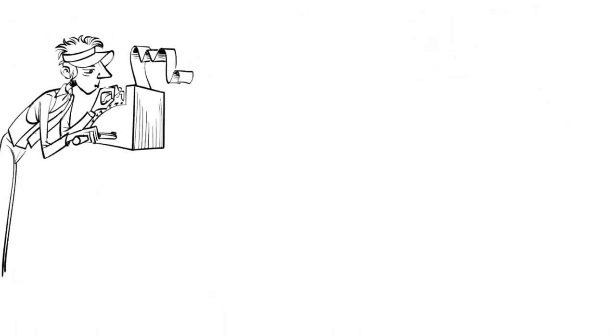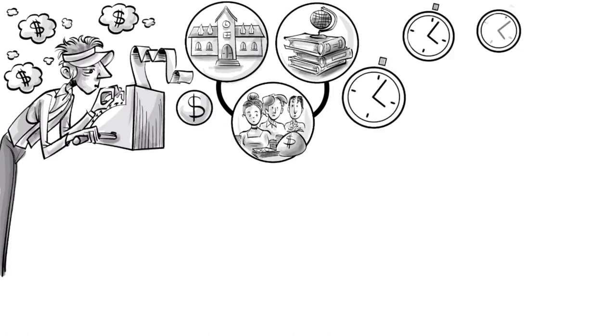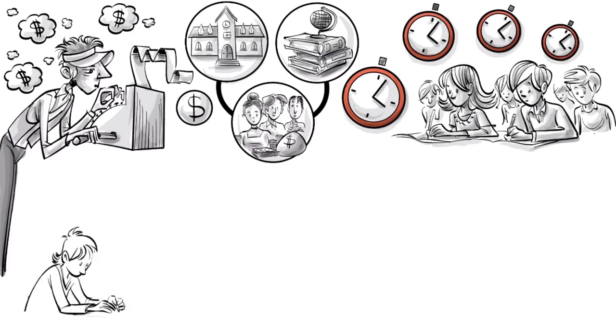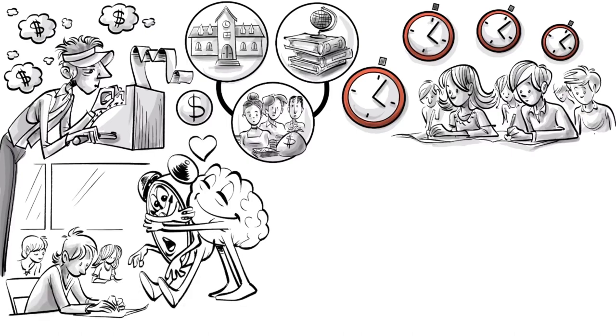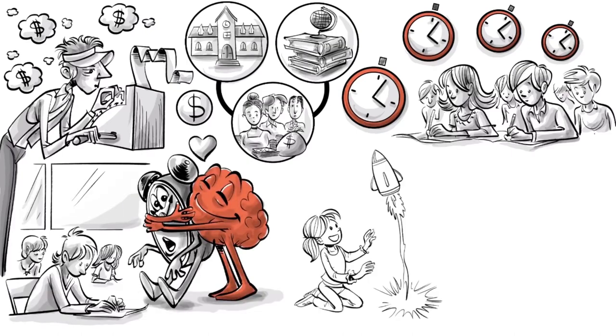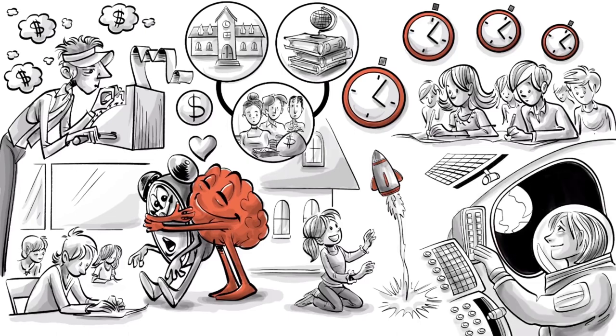Dewey believed that when societies calculate the price of education, they shouldn't only look at the cost of school buildings, teacher salaries and other resources. They should also consider the costs of all the hours input by the children. Because the children are the future of our society and human progress, their time in class ought not to be wasted. It is thus the school's responsibility to be a playground to practice a future we wish to see, so when the kids grow up, they can go and create it.